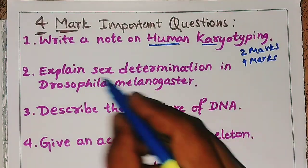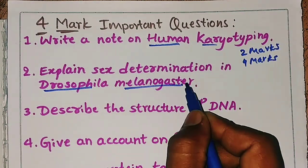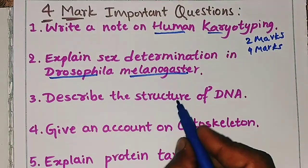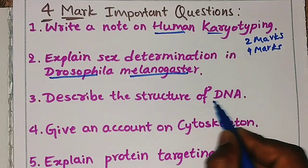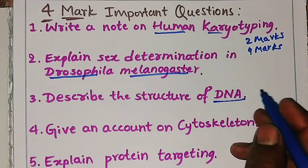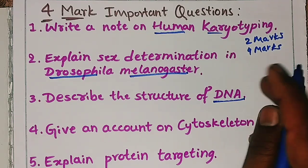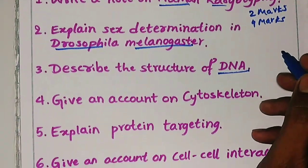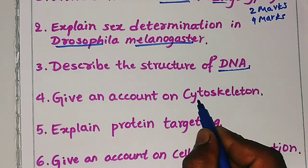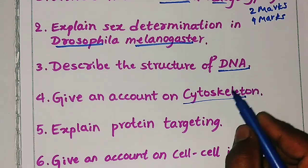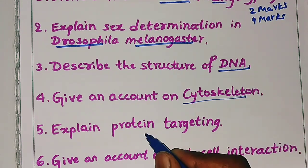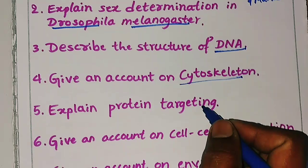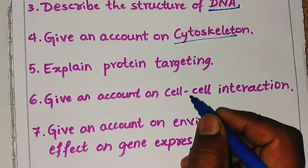The second question is: explain sex determination in Drosophila melanogaster. The third question is: describe the structure of DNA — the deoxyribonucleic acid. The fourth question is: give an account on cytoskeleton. The fifth question is: explain protein targeting — write the definition and related things.